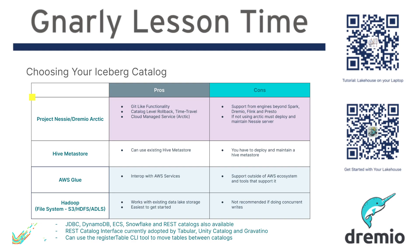This is a little bit different than other catalog vendors, which are more like general data catalogs that track your data in many different places just to help people become aware of what data exists. This is more of a catalog for engines to know which iceberg tables you have and where to find the metadata. Essentially, every iceberg catalog tracks a list of all your table names, and associated with each table name is an absolute file location for where the current metadata.json is for that table.